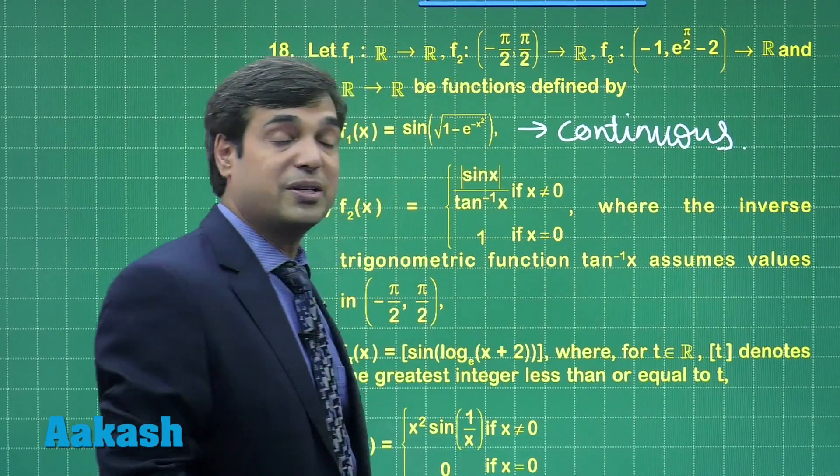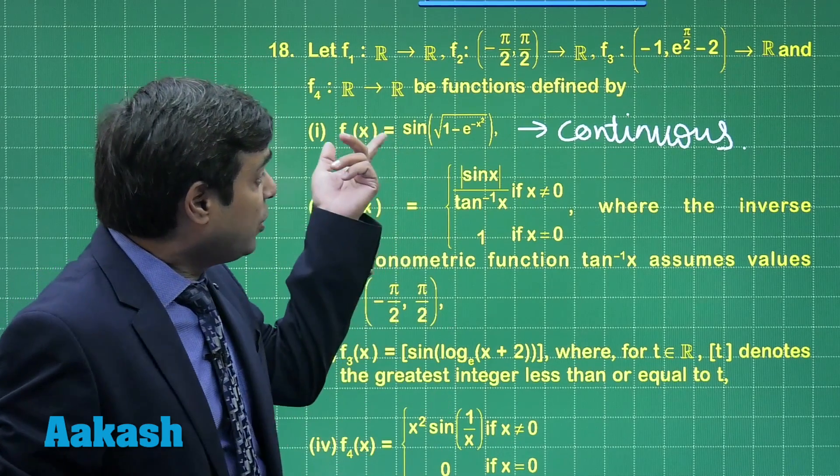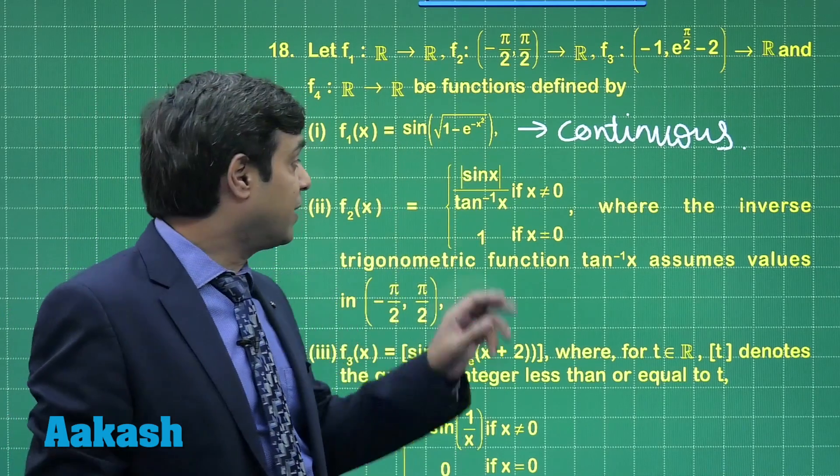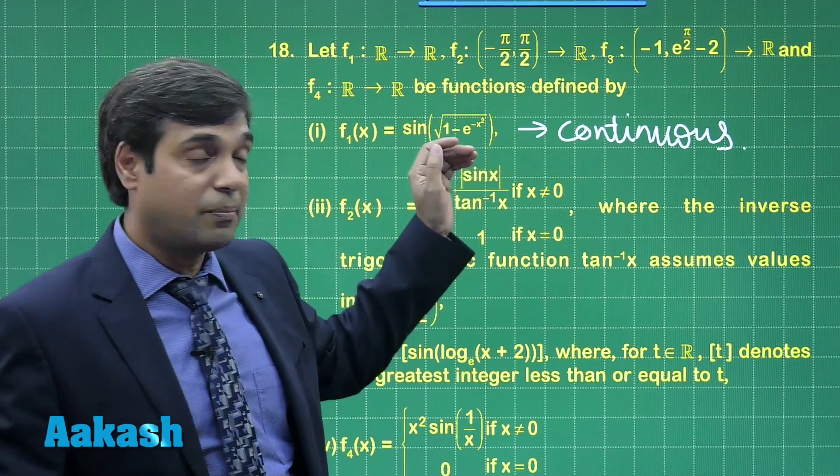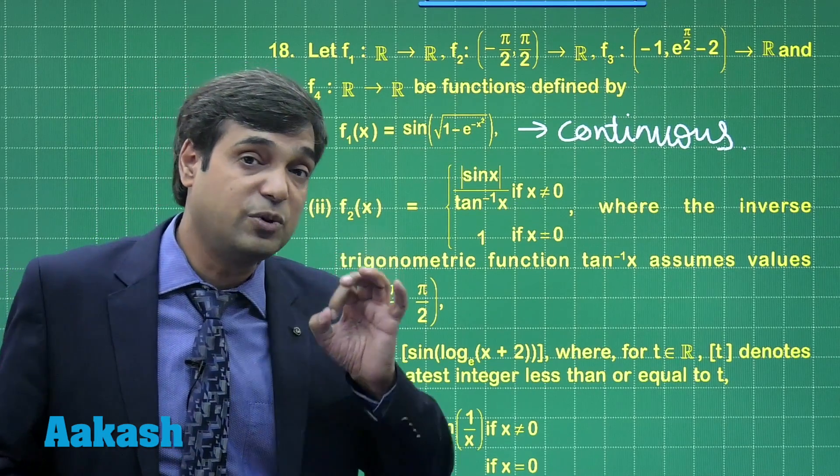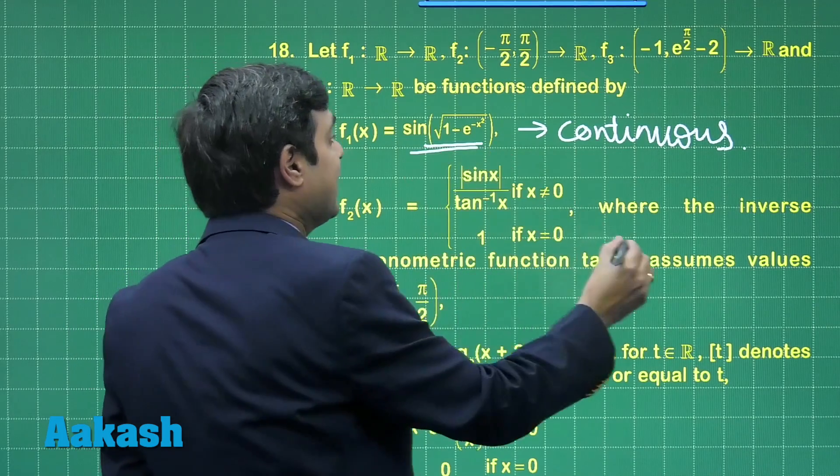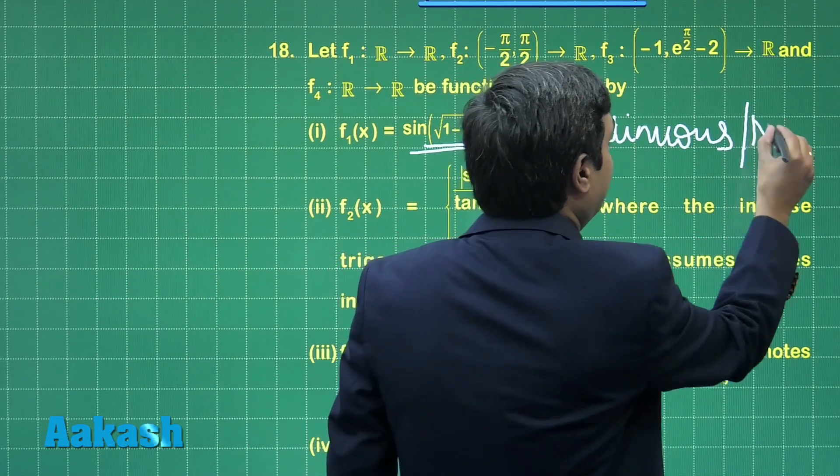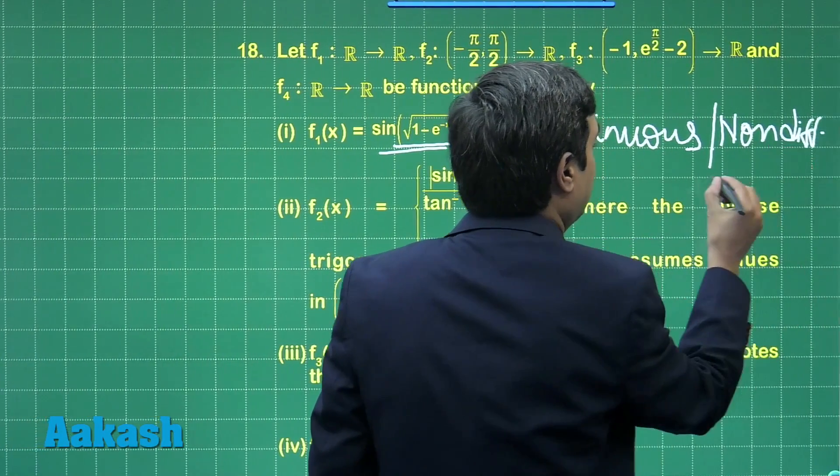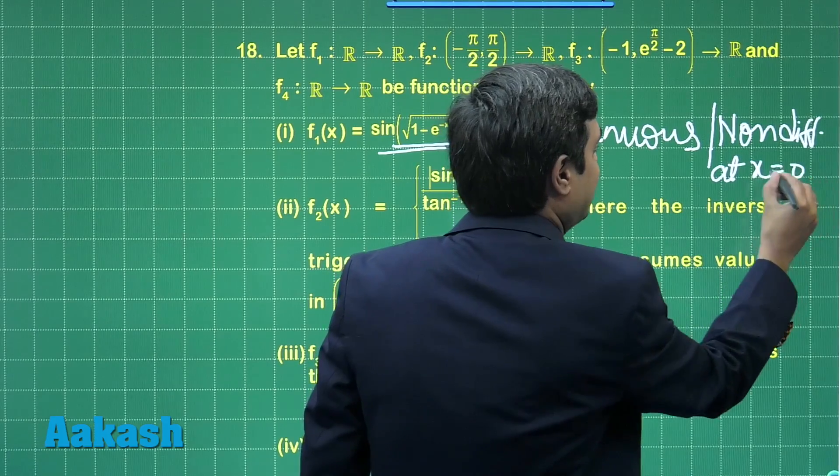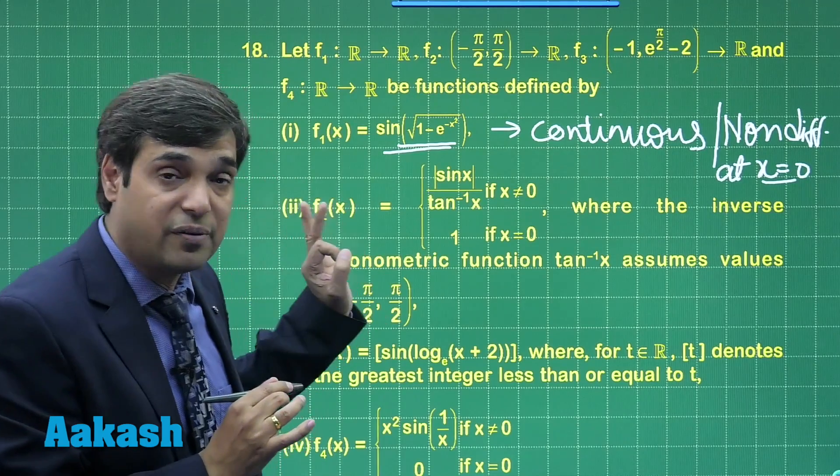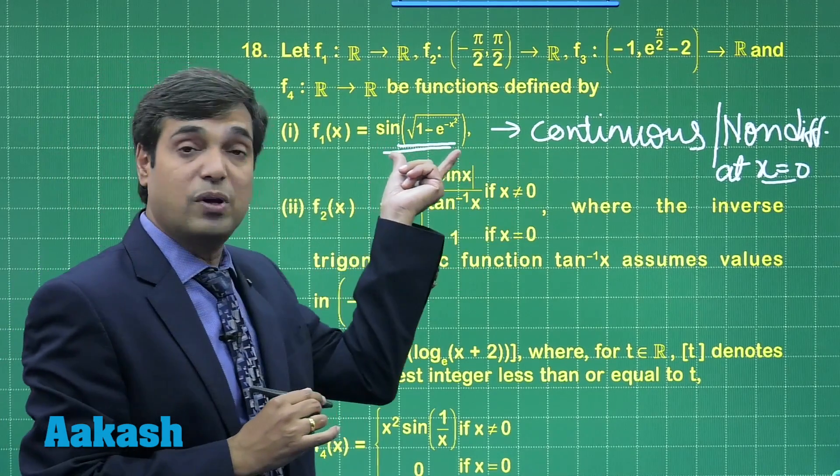It is not about only x equals 0, it is continuous everywhere. When we talk about the differentiability of this function, when we are going to differentiate it will give you cos(θ) into some derivative which will involve √(1 - e^(-x²)) term in the denominator. Clearly we can see it creates non-differentiability at x equals 0. This function is continuous everywhere but it is not differentiable at x equals 0.